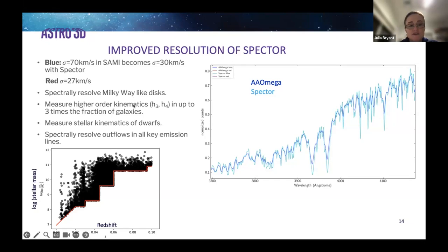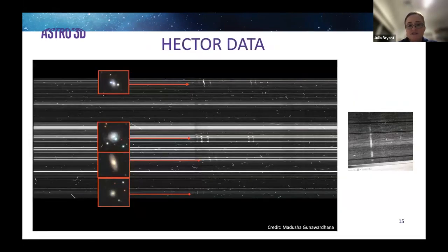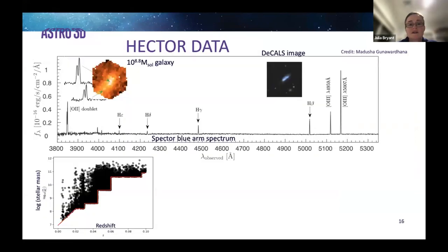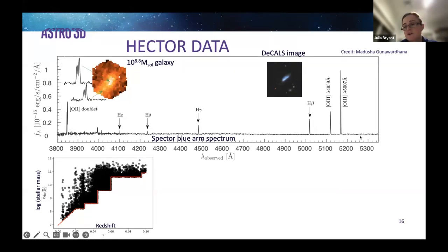You need very high spectral resolution to see these galaxies, and that is a niche for Hector. Here's a screenshot of raw data showing the H-alpha and related lines in the red arm. This is one galaxy observed just last month — it's 10^8.8 solar masses, a faint dwarf galaxy. You can see resolved [O II] doublet in the center out to the very edges, and very strong [O III] lines along with the full Balmer series.